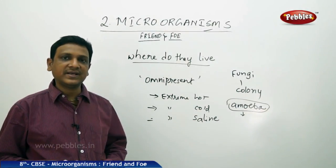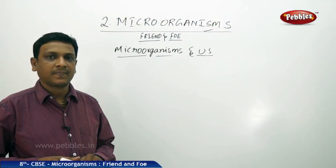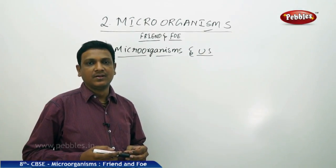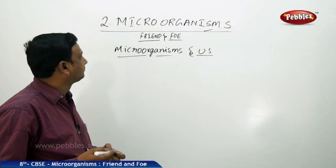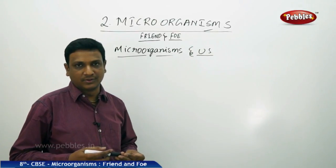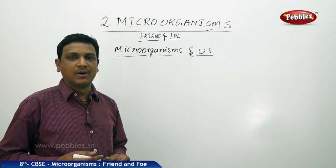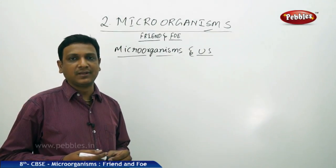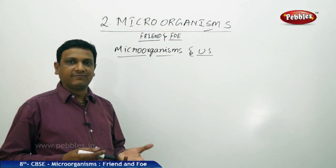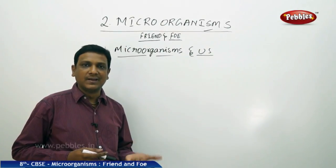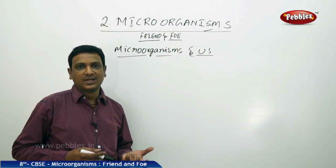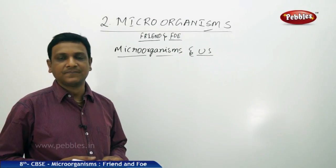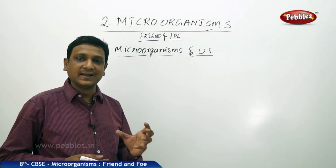Now let us see microorganisms and their relation with us. We maintain a friendly relation as well as there is certain harm from microorganisms. When discussing infectious diseases, these are caused by microorganisms - diseases like typhoid, cholera, tuberculosis, malaria, polio, chickenpox, and HIV/AIDS. Some of these diseases do not have a cure and lead to death.